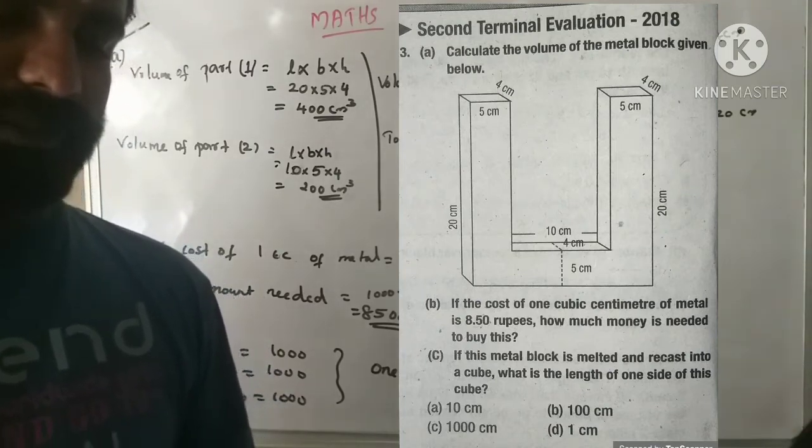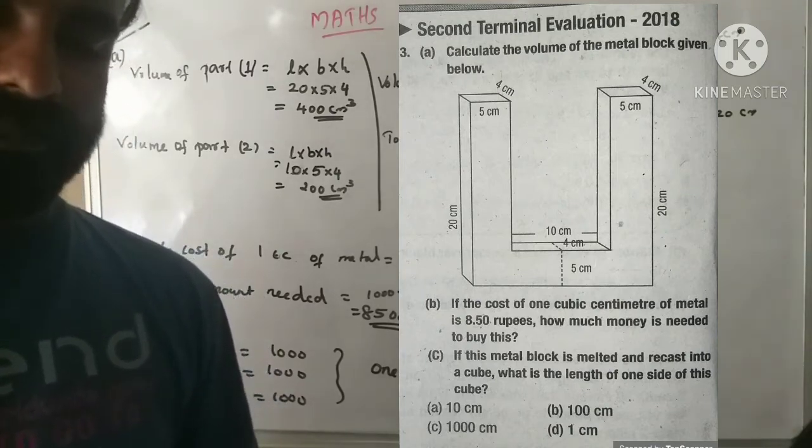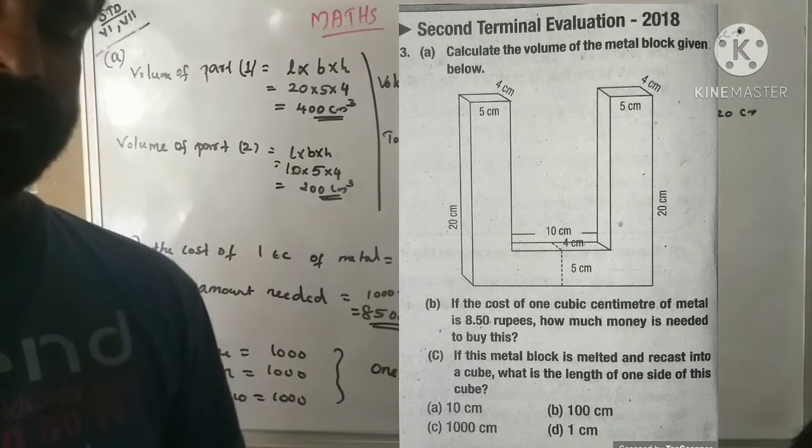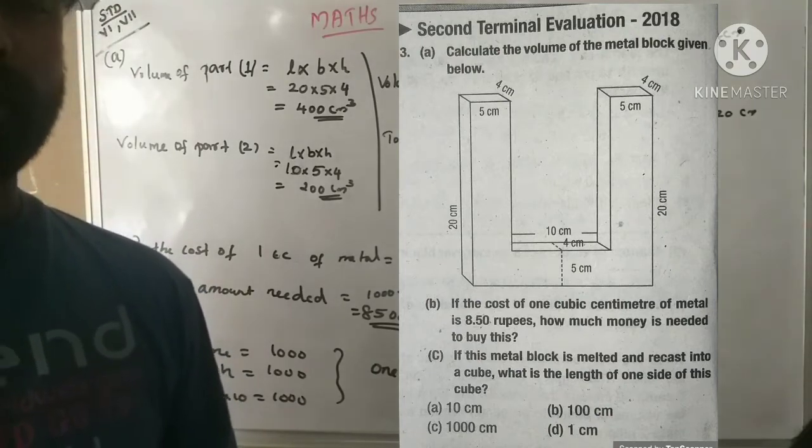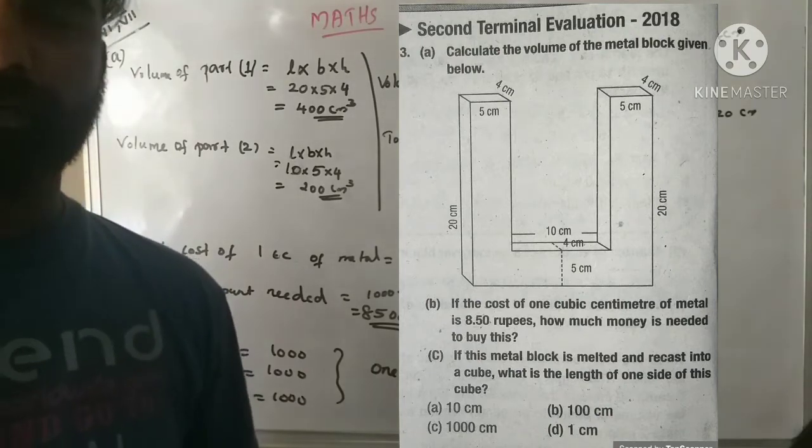If the metal block is melted and recast into a cube, what is the length of one side of this cube?